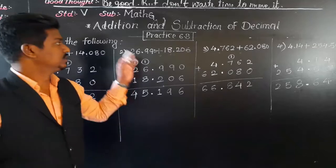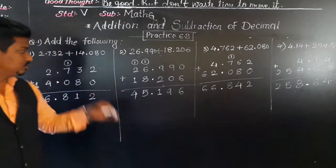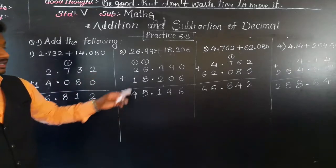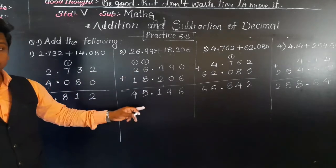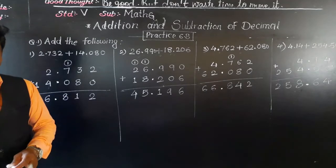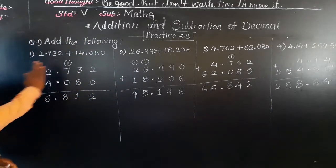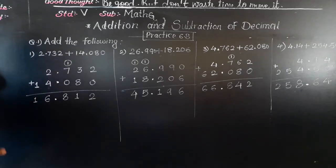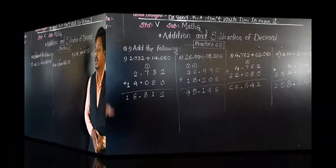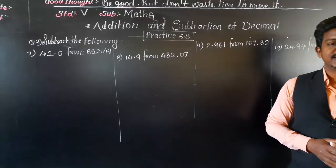The same rules apply for subtraction of decimals. First we have to convert them into like decimals, then arrange vertically with the decimal points exactly below each other, and then subtract. Now pause this video and write these four addition examples in your notebook. The remaining two examples you have to try by yourself.